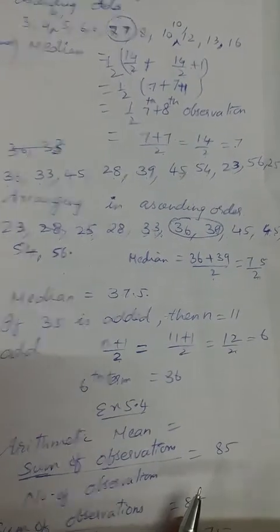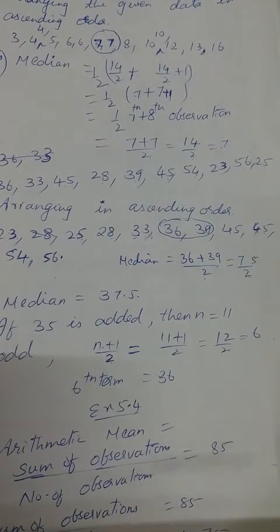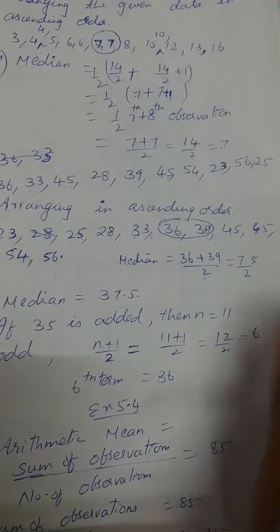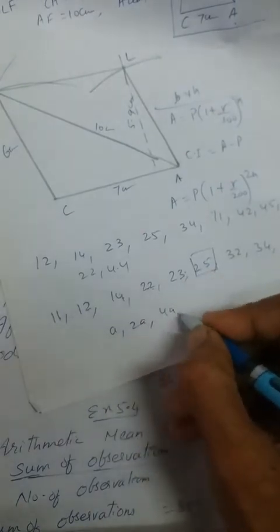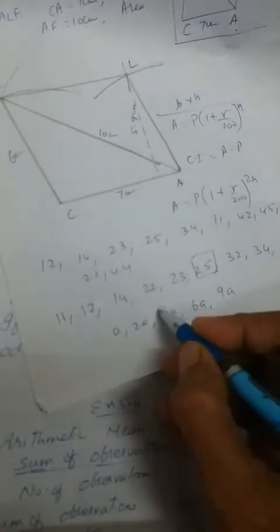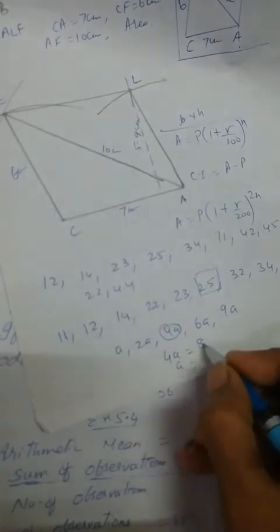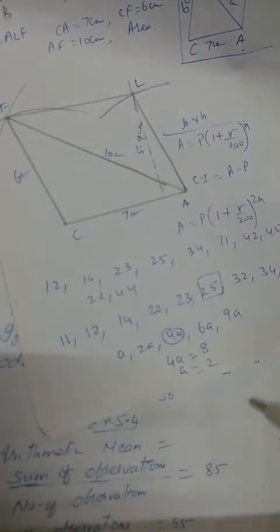Now the objective types. If the median of a, 2a, 4a, 6a, 9a is 8, find the value of a. The middle value here is 4a. Since the median is given as 8, we have 4a = 8, so a = 8 divided by 4 = 2. So the answer is 2, which is the third option.